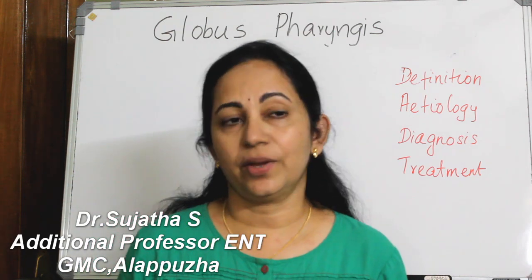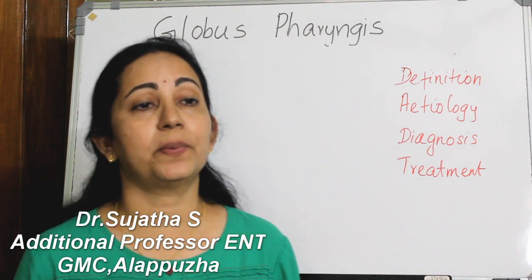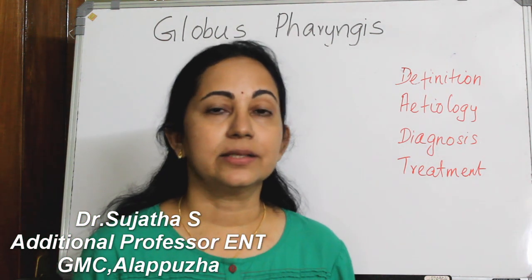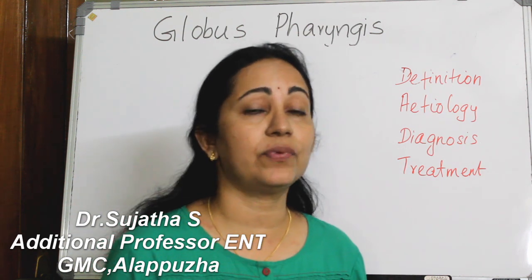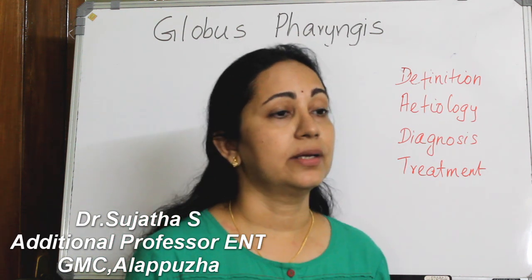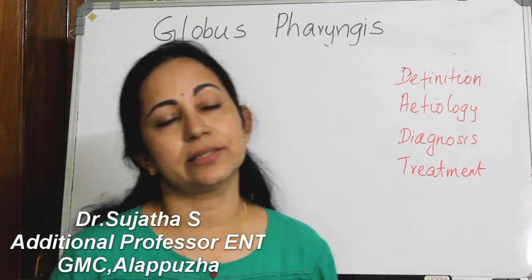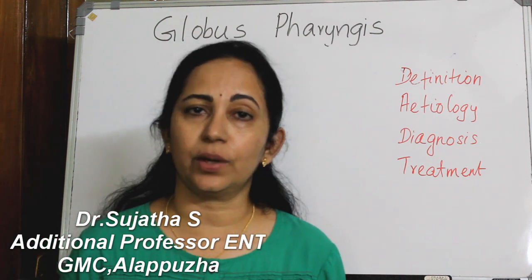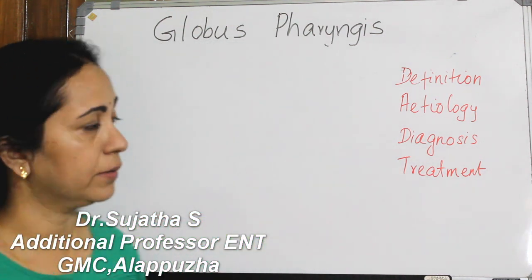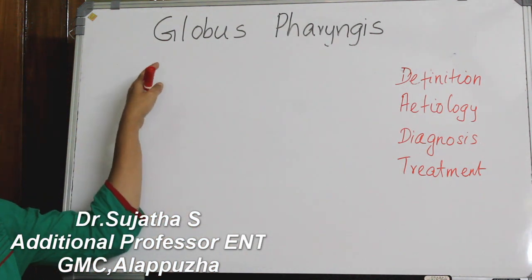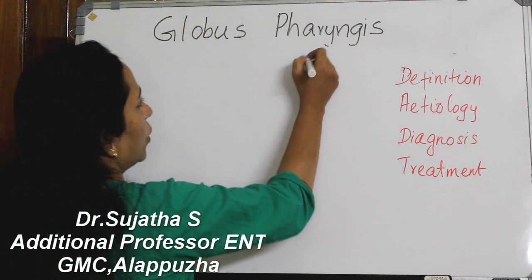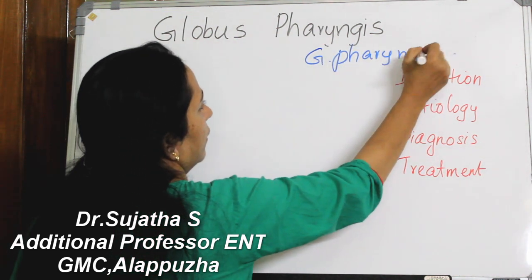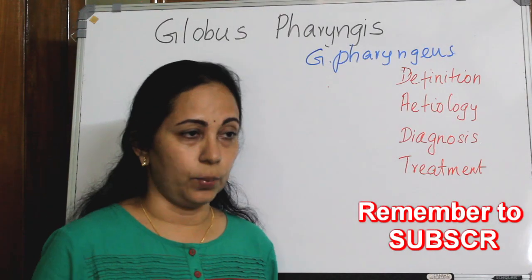Around 4% of patients referred to ENT clinics present with a complaint of something stuck in the throat, a feeling of a lump in the throat, or a sensation of tightness in the throat. This condition is mostly known as Globus pharyngeus, or simply Globus.